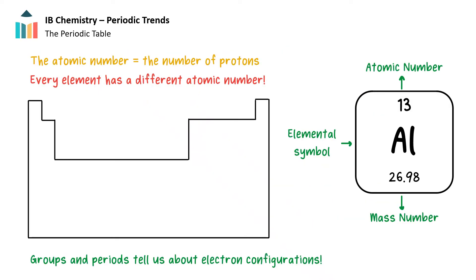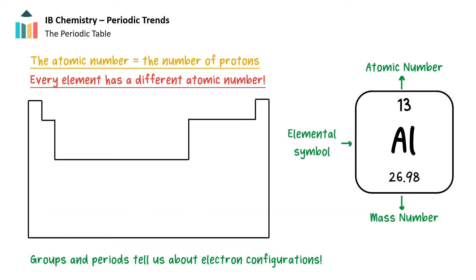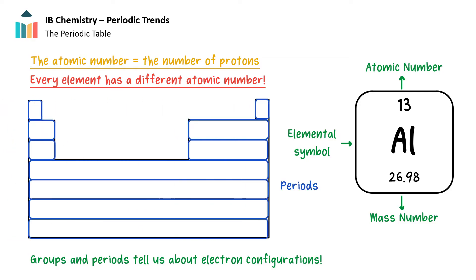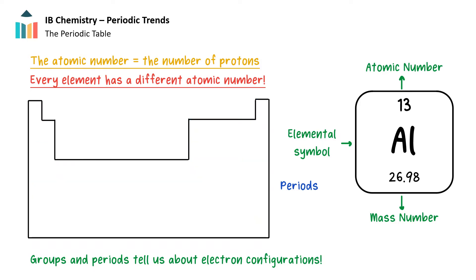The elements on the periodic table are arranged according to their atomic numbers. The atomic number of an atom indicates the number of protons in the nucleus. Changing the atomic number changes the element. The periodic table shows the elements in order of increasing atomic number. Each element is represented by its symbol with the atomic number on top and the relative atomic mass shown below. Rows in the periodic table are called periods, while columns are called groups. Elements are organized into periods and groups based on their electron configuration.